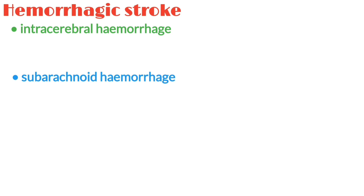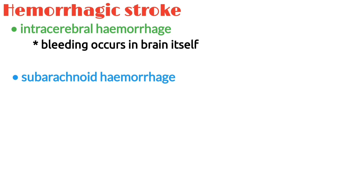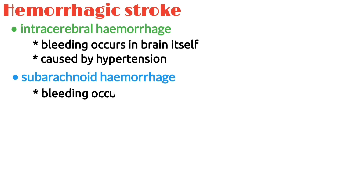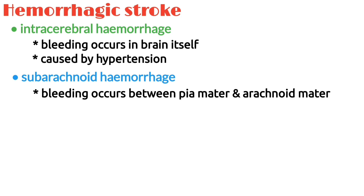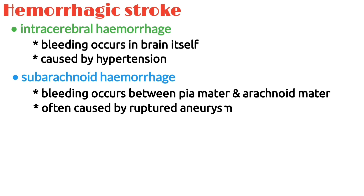An intracerebral hemorrhage happens when the bleeding occurs in the brain itself and is usually caused by hypertension. A subarachnoid hemorrhage is when the bleeding occurs between the pia mater and arachnoid mater of the meninges, and is most often caused by a ruptured aneurysm.